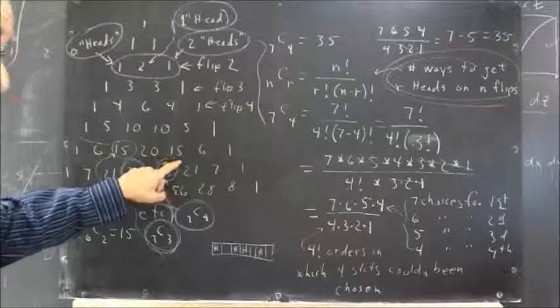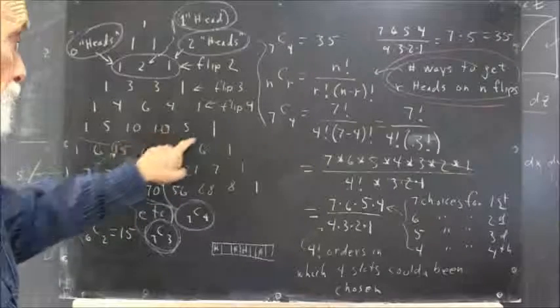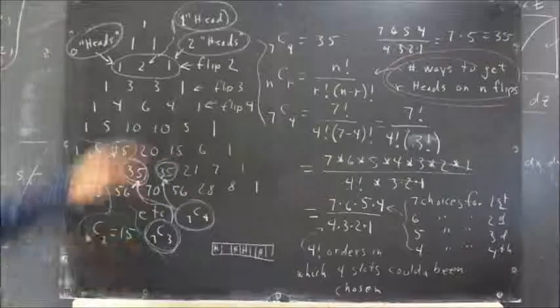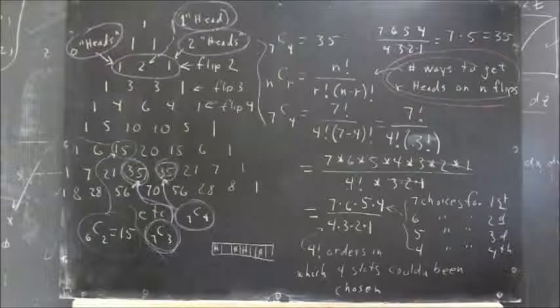For example, now down here the 15 comes from adding the 10 and the 5 gives us 15. So we construct Pascal's Triangle in that way.